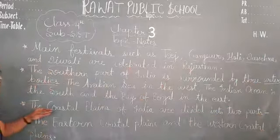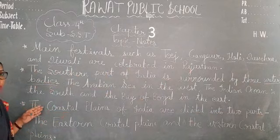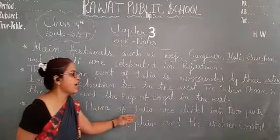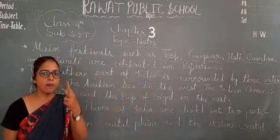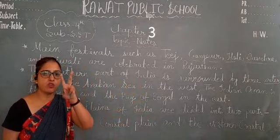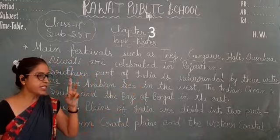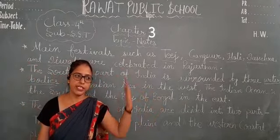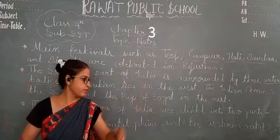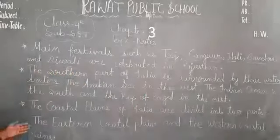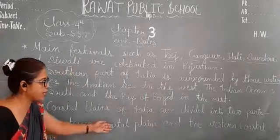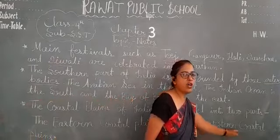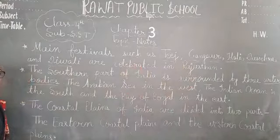Now we will talk about the coastal plain. The coastal plains of India are divided into two parts: the eastern coastal plain and the western coastal plain.